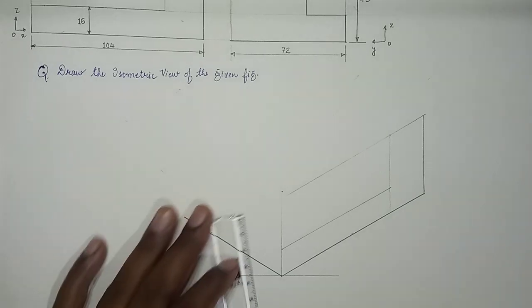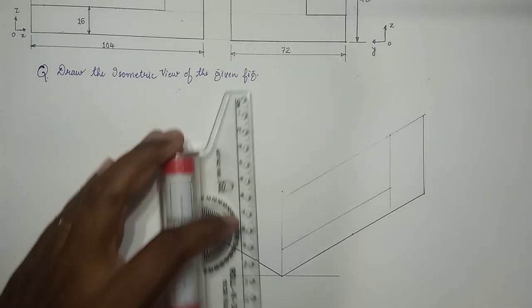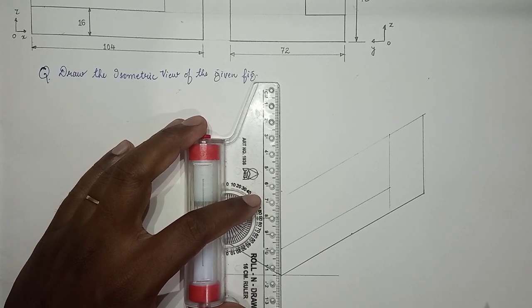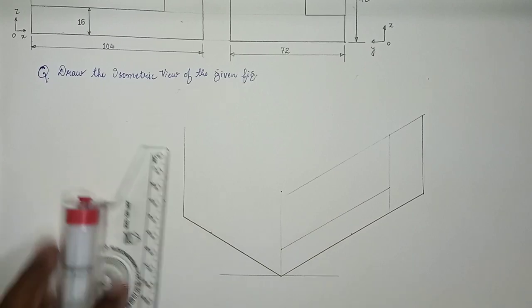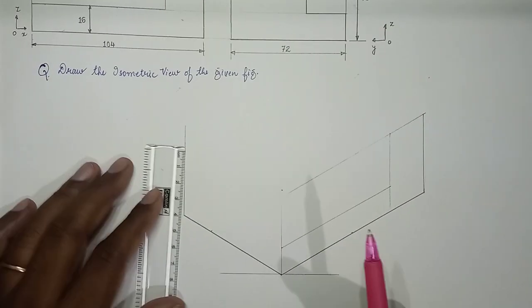72 by 48. So we have roller scale, we make use of roller scale over here and mark 48 on this.